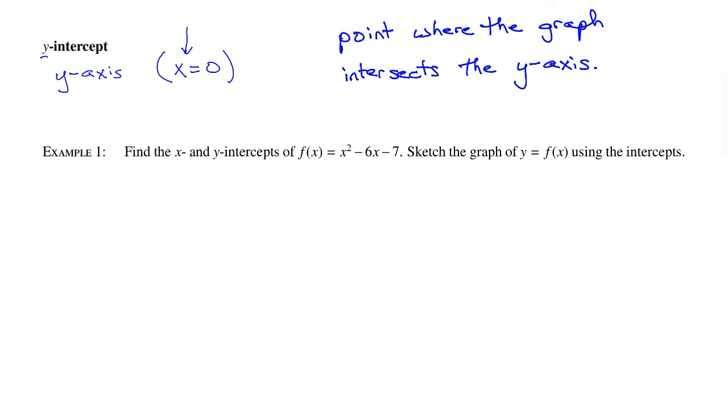Let's look at example number one. Find the x and y-intercepts of f(x) = x² - 6x - 7. Sketch the graph of y = f(x) using the intercepts. So we want both intercepts. Let's start with the x-intercepts. The x-intercepts are where y is equal to 0.